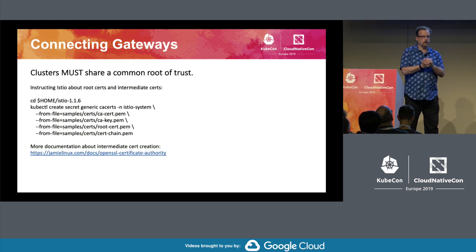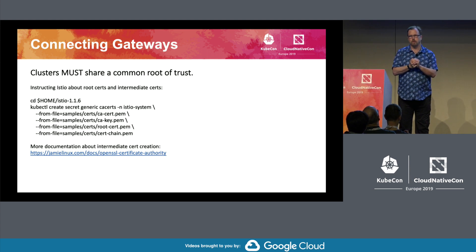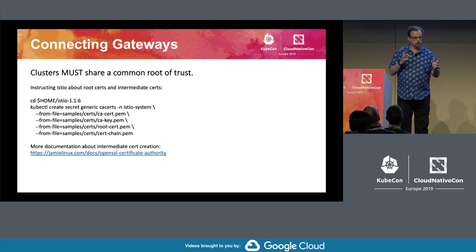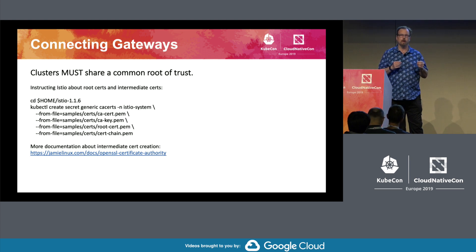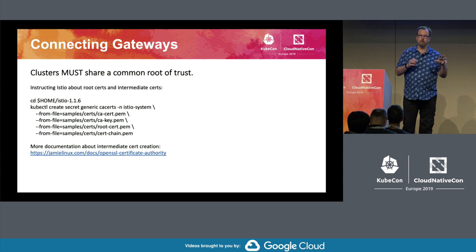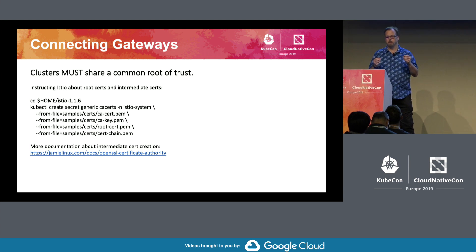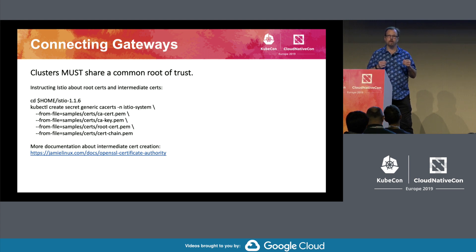To connect the gateways, you have to have a shared root of trust, which means you need to be able to register certificates. You can create your certificates as you like. The root certificate has to be very carefully handled, because if you lose one root certificate on a cluster, your hundreds of clusters have been compromised. In 1.2, we're increasing security by running Citadel in its own namespace so people can't access that information at all. The clusters must have a shared root namespace. It takes about two hours to go through the documentation if you are dedicated.